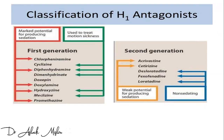The first generation H1 antagonists include very popular drugs such as chlorphenamine, diphenhydramine, cyclizine, hydroxyzine, meclizine, and promethazine. These are your most common first-generation antihistamines.